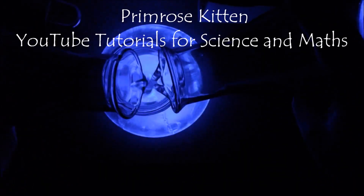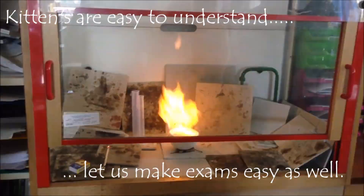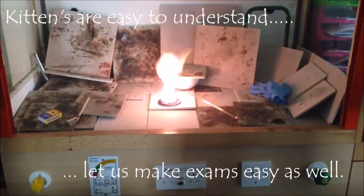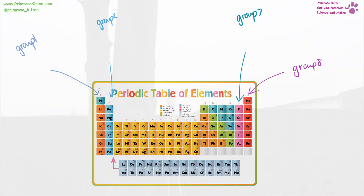The periodic table is a fantastic thing, but only if you know how to read it properly. In this video, we go over the different groups in the periodic table and what they mean. This beautifully colored periodic table reflects the many different groups and categories on the periodic table.